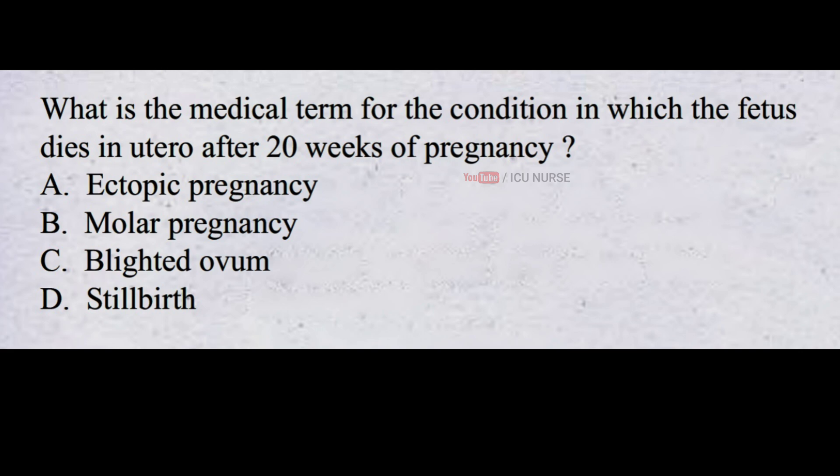What is the medical term for the condition in which the fetus dies in utero after 20 weeks of pregnancy? A. Ectopic pregnancy. B. Molar pregnancy. C. Blighted ovum. D. Stillbirth. And the correct answer is D. Stillbirth.